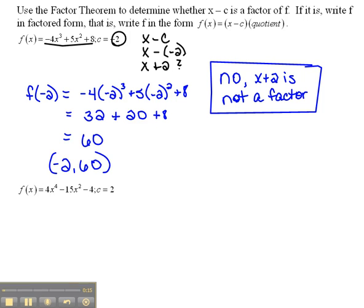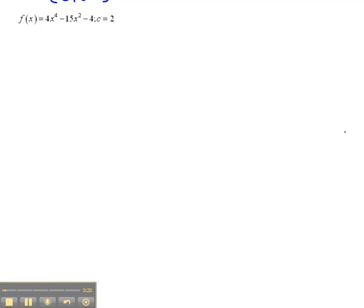Let's try another one here. So here we have a problem where we have f(x) is equal to 4x to the fourth minus 15x squared minus 4, and we're going to see if this c value leads us to an x-intercept, if it's a zero.